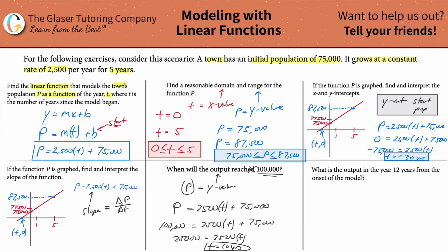What is the output 12 years from the onset of the model? Again, this extends beyond the five-year scope, but we'll apply the model anyway. P = 2,500 × 12 + 75,000 = 30,000 + 75,000 = 105,000. So according to the model the population would be about 105,000 at year 12, though the model's accuracy beyond five years is uncertain.